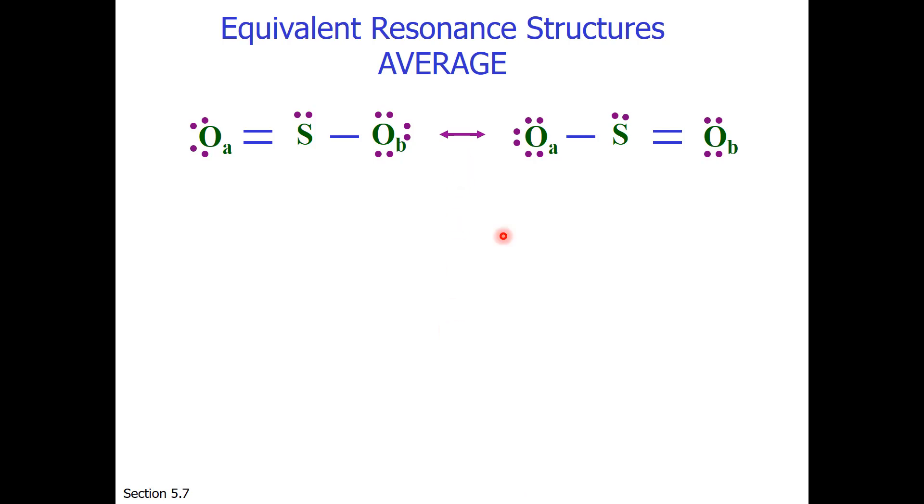These two structures for SO2 are the exact same structure looking at one another across a mirror plane represented by the double-headed arrow. So for the structure on the left, the sulfur-oxygen bond order for oxygen A, if we look at it, is 2.